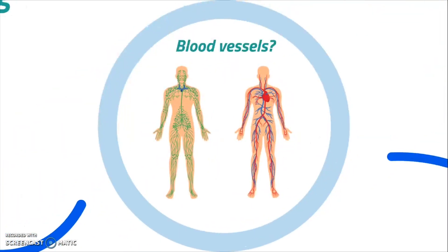Our lymphatic system is a bit like our blood vessel system. It too has vessels that run throughout the body. On the left, you can see the lymphatic vessel system, and on the right, the blood vessel system. The lymph vessels surround our blood vessels.